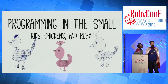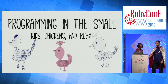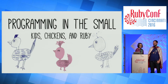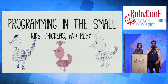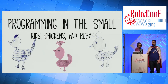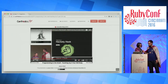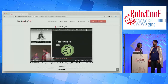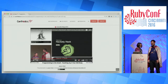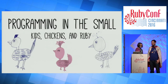Welcome everybody to your programming in the small kits, chickens, and Ruby. I'm Jason Clark. I work as a software architect at New Relic. And that's your opportunity to tell them who you are. Hi, I'm Cora. We're so glad that you're here today, everybody.